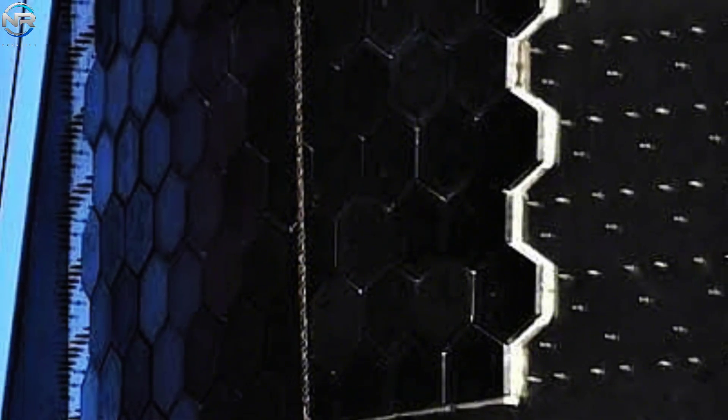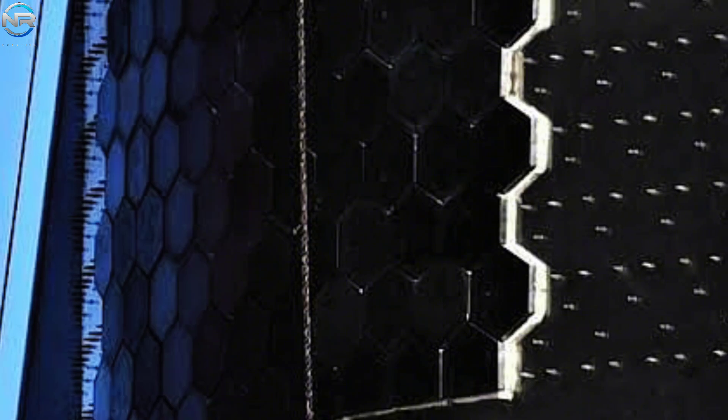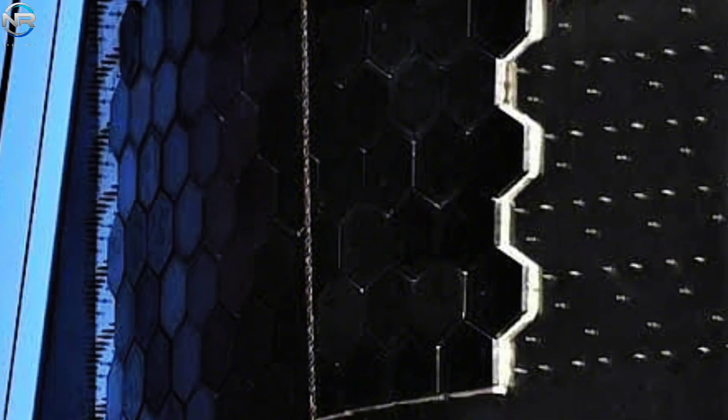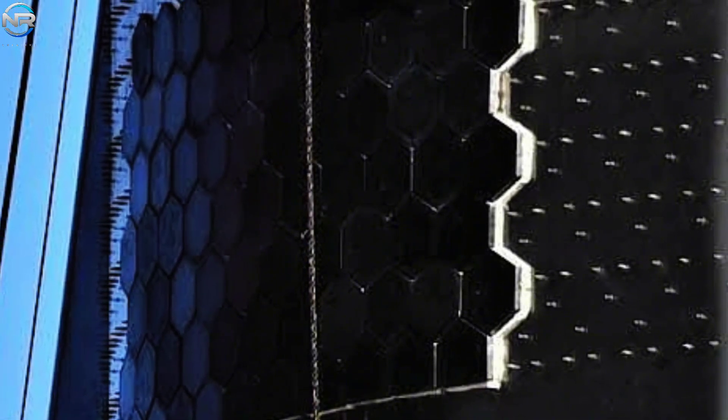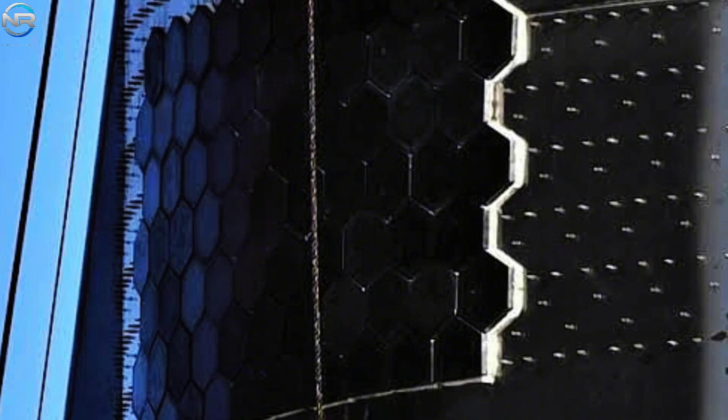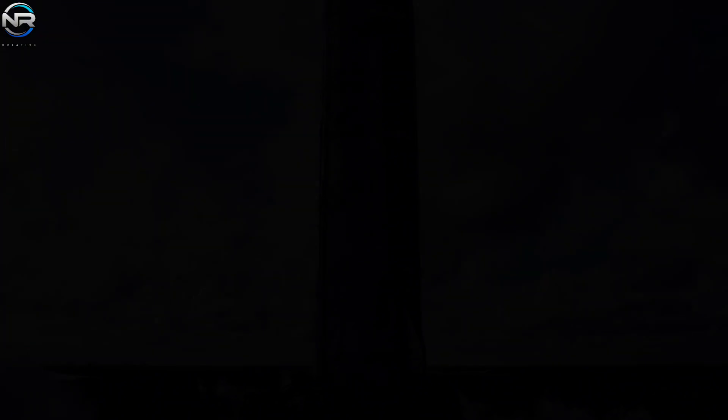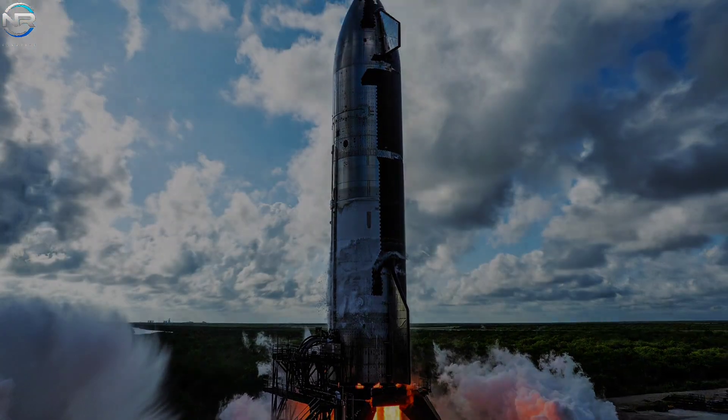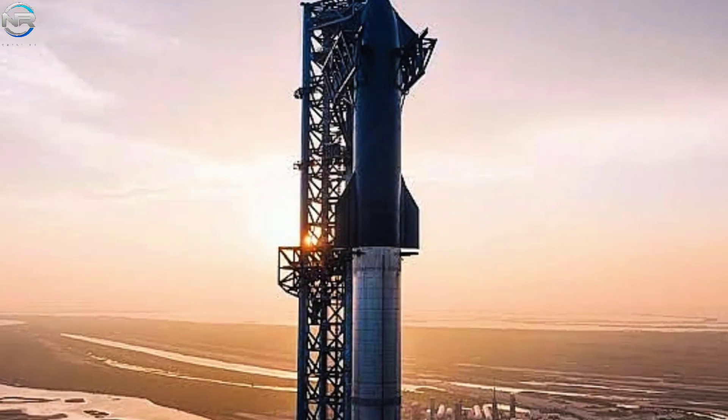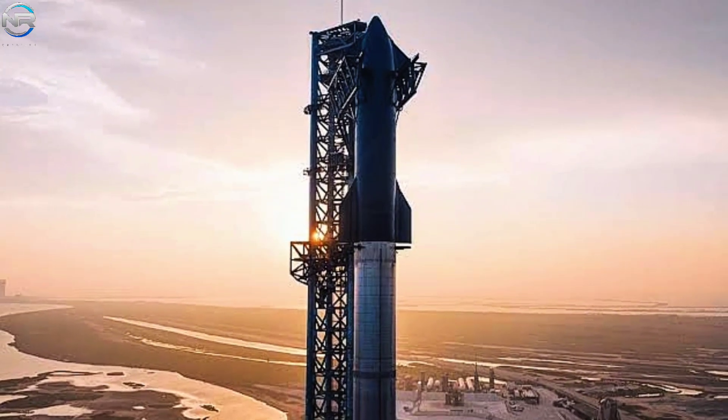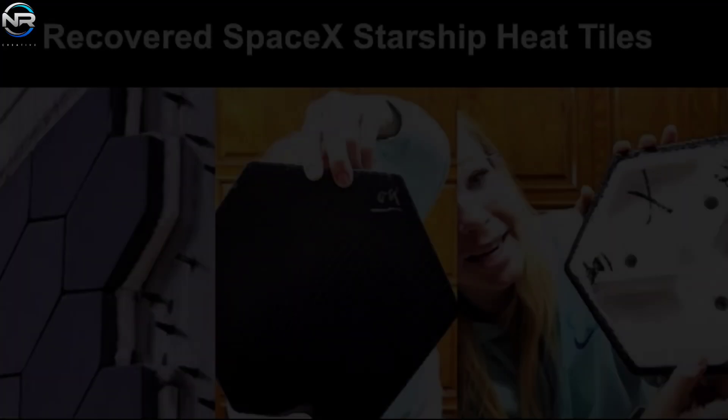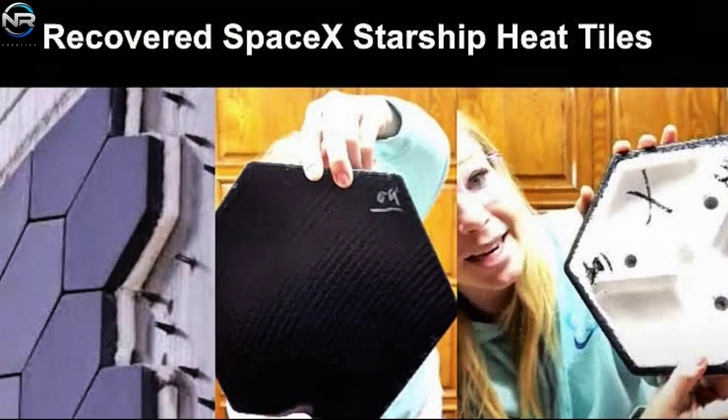Metal tiles are easier to maintain than ceramic tiles. Unlike ceramic tiles, which require careful inspection after each flight, metal tiles can be reused multiple times with significantly less maintenance. SpaceX says the metal shield can potentially withstand 50 flights before requiring significant repairs. This capability represents a significant improvement in operational efficiency and sustainability, especially considering the extensive work required to maintain the ceramic tile system.